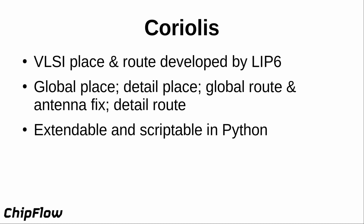Coriolis is the place and route tool we use. It's a VLSI place and route tool developed primarily by LIP6 in France, with a very typical VLSI flow: global placer, detail placer, global routing, antenna fixing to prevent antenna violations, and then detail routing. One of the nice things about Coriolis is that it's extendable and scriptable in Python — you're not writing thousands of lines of Tcl for custom placement. This is useful where you need to mix general purpose place and route with custom placement, for example placing blocks for an embedded FPGA in a regular way.